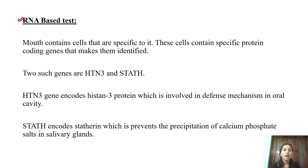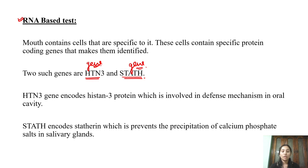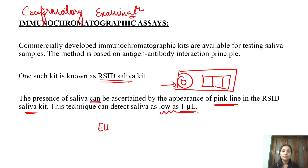The next test is the RNA-based test. The mouth cells contain specific protein-coding genes present in saliva. There are two genes: HTN3 and STATH. You can also use ELISA for saliva examination — the color changes allow quantitative analysis using the same ELISA mechanism we have studied, but applied to saliva identification.